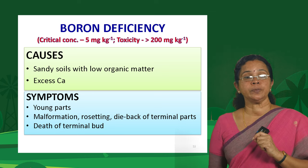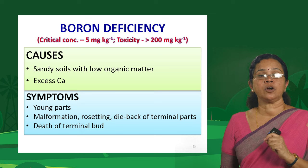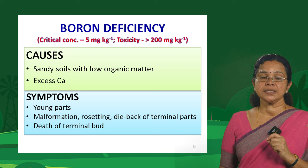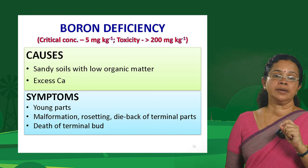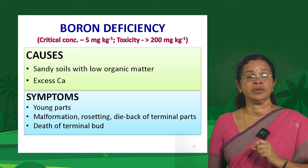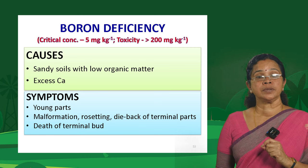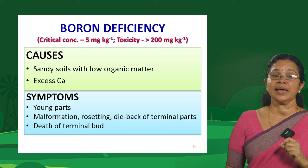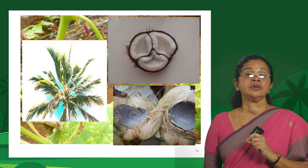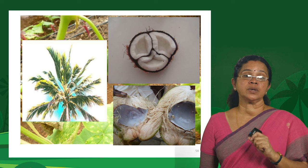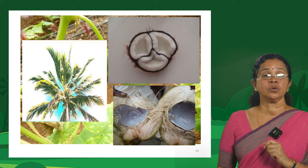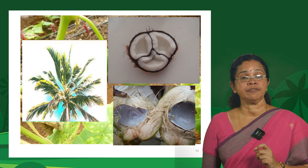A nutritional disorder due to boron deficiency is termed hollow stem in cauliflower — the stem turns hollow. Another is top sickness of tobacco, where the terminal bud is affected, and heart rot of sugar beet where the tip of the plant rots away. In salad cucumber — both in protected cultivation and in the open — you can see malformation of the fruits due to boron deficiency. Coconut is one perennial crop widely affected by boron deficiency.